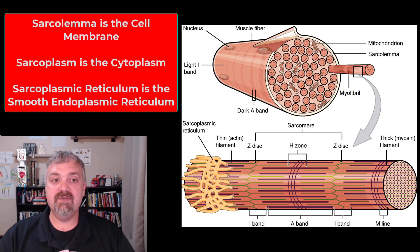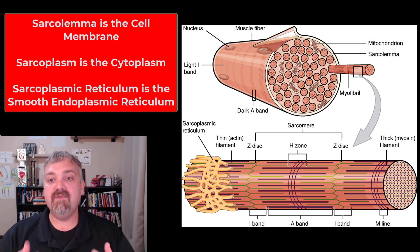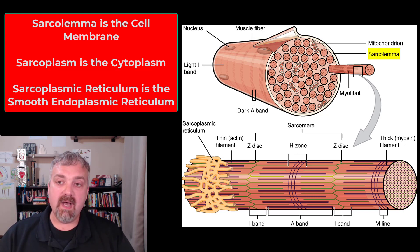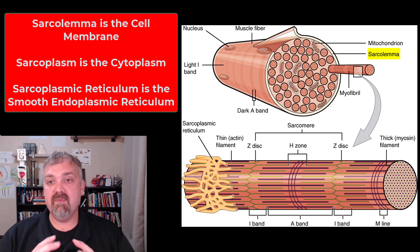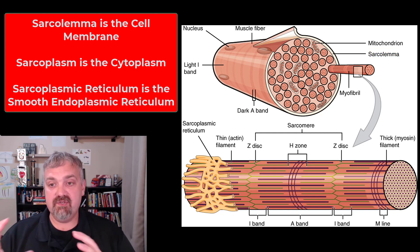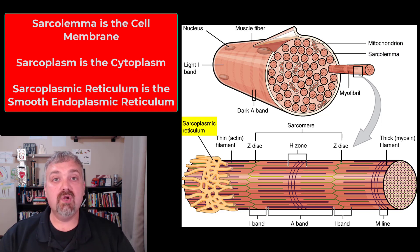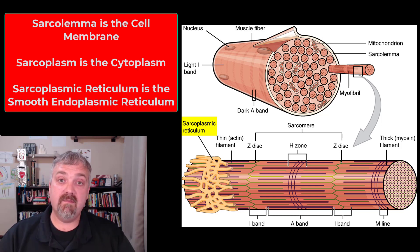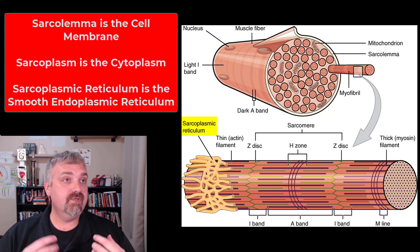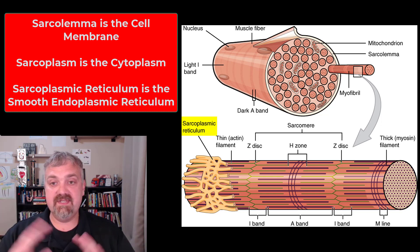Let's cover a bit more of the terminology — you'll notice the term 'sarco' a lot. Sarco is Greek for flesh. So the sarcolemma is the name for the plasma membrane or cell membrane around a muscle cell. The juice inside the cell, what's normally called the cytoplasm, is called the sarcoplasm. And then on the left-hand side you see the sarcoplasmic reticulum — that's a fancy name for the smooth endoplasmic reticulum of a muscle cell — and its job is to store, release, and then retrieve calcium, which plays critical roles in muscle contraction.